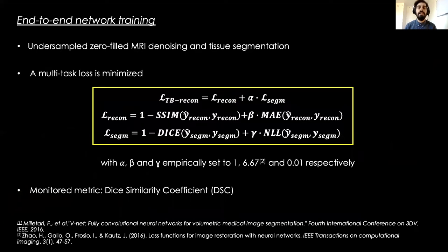The network is trained end-to-end. To do so, it minimizes a multi-task loss with a reconstruction and segmentation term. Alpha, beta, and gamma are hyperparameters empirically set to rescale the losses and balance the importance of each task.